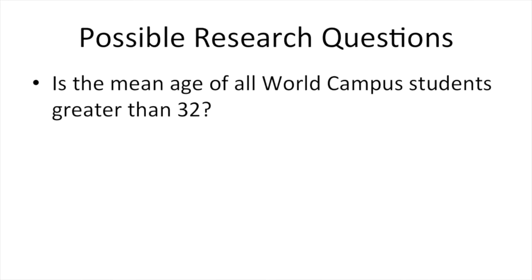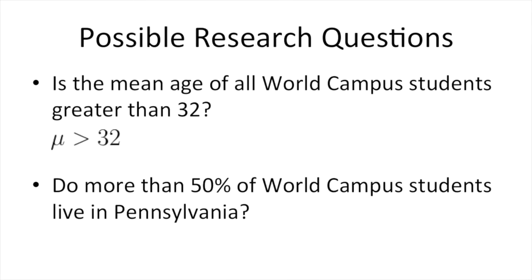Here are some possible research questions we can address using hypothesis testing this week. Is the mean age of all world campus students greater than 32? In other words, is the population mean mu greater than 32? We'll see that this is known as an alternative hypothesis. Do more than 50% of world campus students live in Pennsylvania? In other words, is the population proportion greater than 0.50?